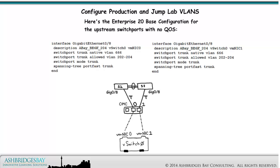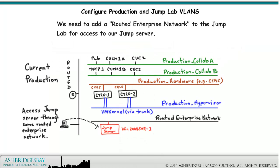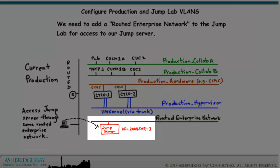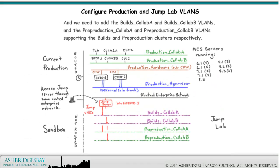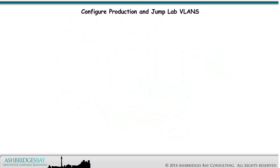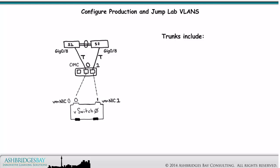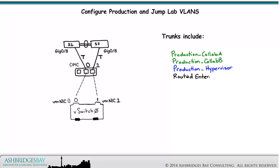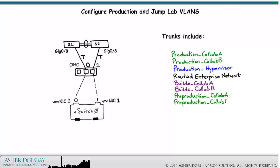Here is the Enterprise 20 configuration for the upstream switch ports with no QoS. We need to add a routed enterprise network to the jump lab for access to our jump server. We also need to add the builds collab A and builds collab B VLANs, and the pre-production collab A and pre-production collab B VLANs supporting the builds and pre-production clusters respectively. The trunks to your servers need to carry all of these VLANs. The production collab A, production collab B, and production hypervisor VLANs are already configured as part of the Day 1 tasks. You need to add the routed enterprise network VLANs, the builds collab A and builds collab B VLANs, and the pre-production collab A and pre-production collab B VLANs to the trunks. The native VLANs should be configured as unused VLANs.